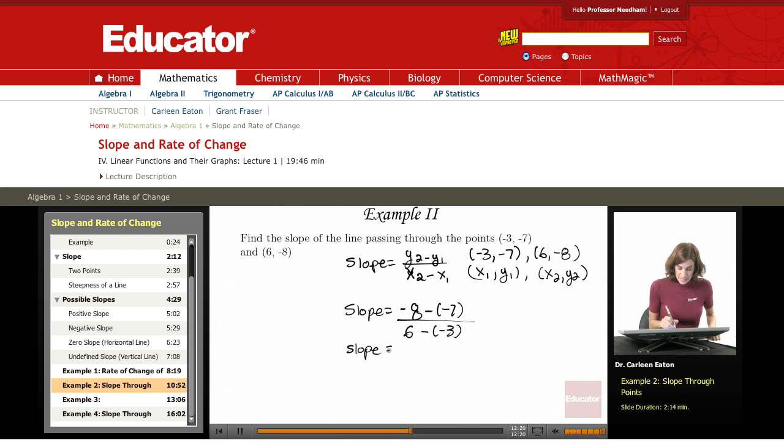To simplify this, I see that this is -8, and minus negative 7, that's plus 7. 6 minus negative 3 is 6 plus 3. So -8 plus 7 is negative 1. 6 plus 3 is 9. So I have a slope of -1/9.